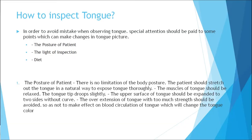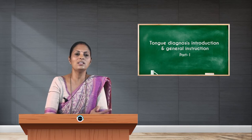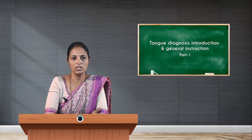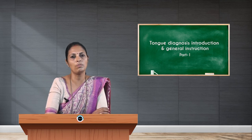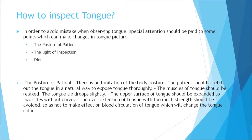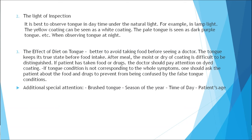When inspecting the tongue, we must consider the patient's posture, the light during inspection, and their diet, as these are contributing factors. The patient should be in a relaxed posture with the tongue muscles also relaxed, and we can ask the patient to stretch the tongue completely. However, intense extension of the tongue should be avoided, as it can change blood circulation, alter the normal color through vasodilation or constriction.